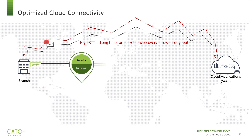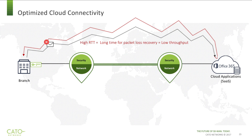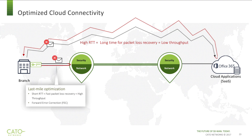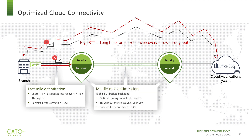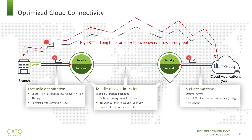Cato solves this challenge by optimizing the last mile and the middle mile segments individually. Cato breaks the connection into three segments. Last mile packet loss can be quickly recovered as it is detected in the nearest pop and not at the destination. Middle mile packet loss at near zero with Cato's SLA backed backbone can be offset by aggressive forward error correction. For cloud applications such as Office 365, Cato sets egress points on the cloud network to exit at the Cato pop closest to the customer's Office 365 data center. We then drop the traffic in the Microsoft data center in the same way as ExpressRoute.